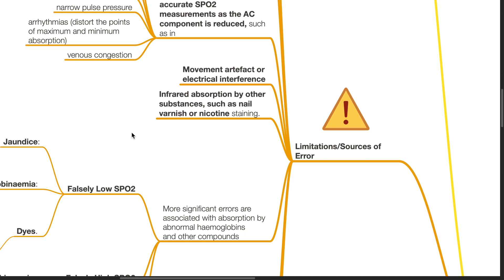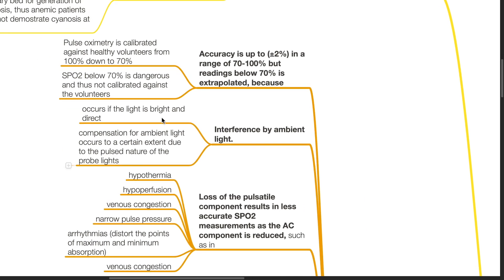Limitations and sources of error for pulse oximetry. Accuracy of pulse oximetry is plus or minus 2% in a range of 70 to 100%, but readings below 70% are extrapolated, as pulse oximetry is calibrated against healthy volunteers from 100% down to 70%, and saturations below 70% are not conducted in healthy volunteers as it is dangerous and unethical.